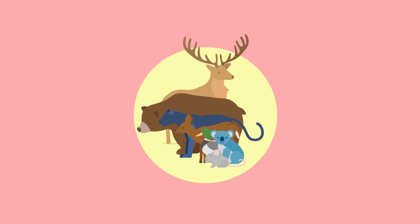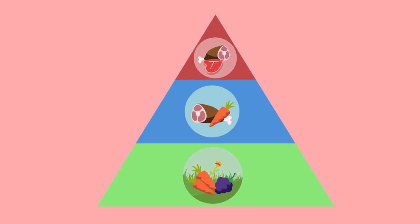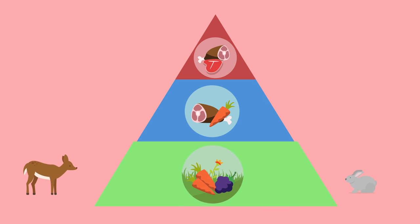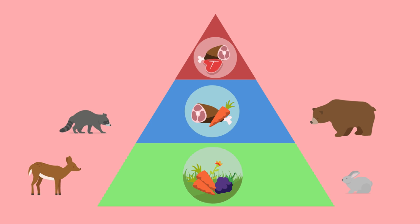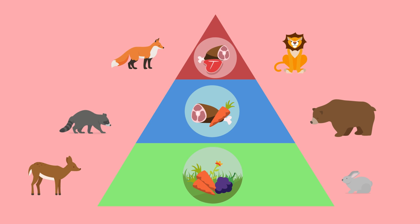The biotic components of an ecosystem also interact with one another, much like the abiotic components. One of the best examples of this is how the various trophic levels interact with each other. A trophic level is how scientists classify animals based on their food preferences. At the lowest trophic level are the herbivores, those animals that primarily eat plants. In the next highest trophic level are the animals that eat the herbivores as well as some plants, known as omnivores. The highest trophic level is the carnivore and is represented by animals such as wolves, lions and eagles.